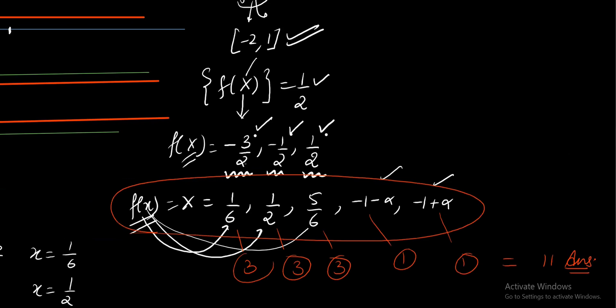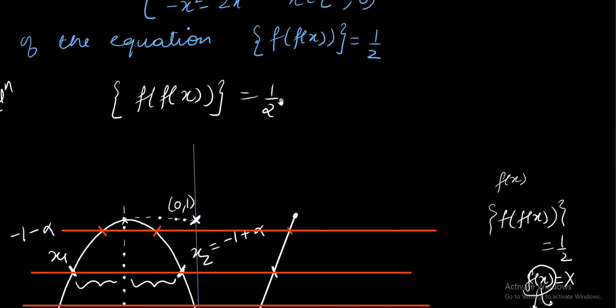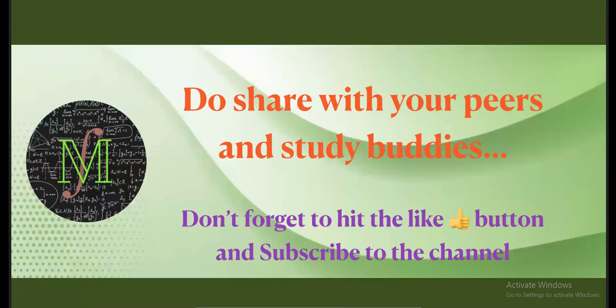But satisfying this equation means satisfying this one. And satisfying this one means having the fractional part 1 by 2, which means we are actually solving this equation. Hope you enjoyed the question. If you found it useful, please give a thumbs up to the video. Do share it with your friends. And don't forget to subscribe to the channel for more such questions. Thank you all. See you in the next video with another question. Till then, take care and bye-bye.